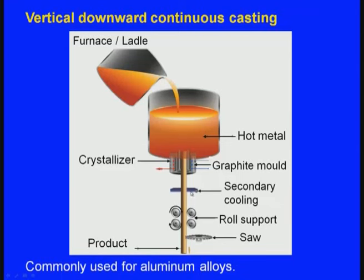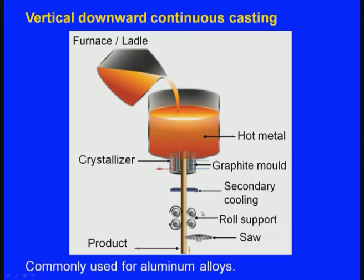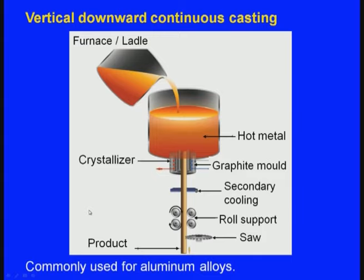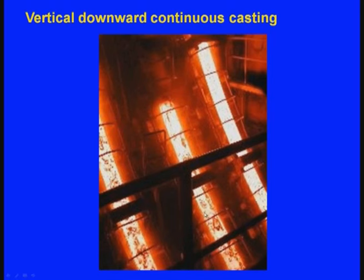By the time it comes to the secondary cooling zone, it will be further cooled. It still comes down, and here there are roll supports which rotate, causing the solidified bar to come down. After it is completely solidified, here there is a saw, which cuts periodically. The solidified cut bar is taken and sent for further processing. This is the simple principle of vertical downwards continuous casting.